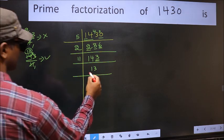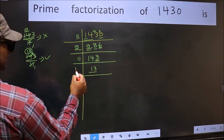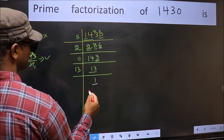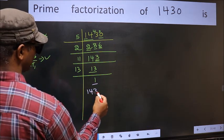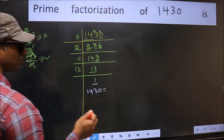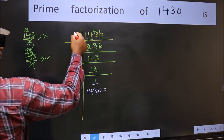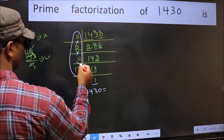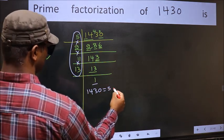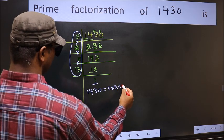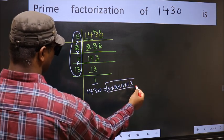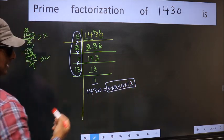13 is a prime number, so 13×1=13. So we got 1 here, so the prime factorization of 1430 is the product of these numbers: 5×2×11×13. This is the prime factorization of 1430.